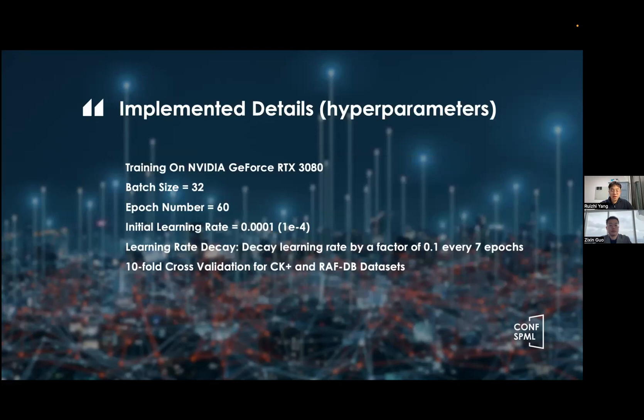Here are our implemented details. We trained our baseline model on NVIDIA GeForce RTX 3080. We use batch normalization and set the batch size to 32. And the epoch number is 60. We also use the learning rate decay method with an initial learning rate of negative 4th power of 10, and decay learning rate by a factor of 0.1 for every 7 epochs. And we also use 10-fold cross-validation for CKplus and RAFDB datasets.